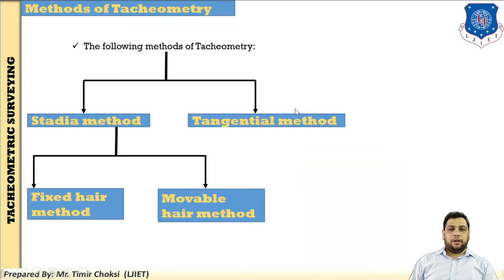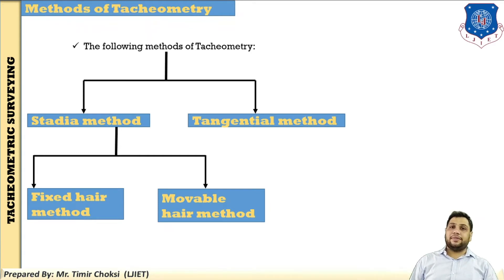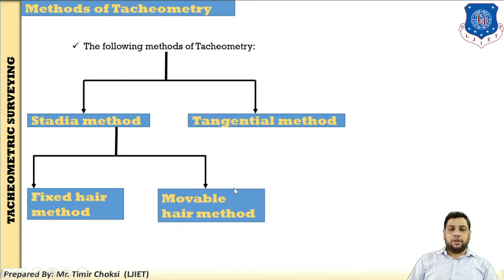I have already given an overview in the previous session on methods of tachymetry. The following methods of tachymetry are: the stadia method, tangential method. In a stadia method there are two methods: the fixed hair method and movable hair method. Using the stadia diaphragm, you find the horizontal distance as well as the vertical distance. In this session I have explained in detail all the methods and taken case number one of the fixed hair method.